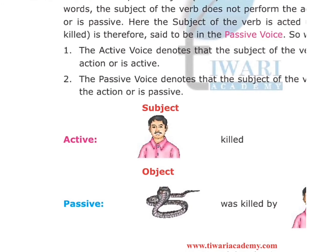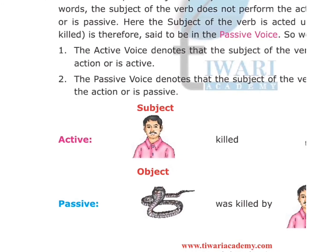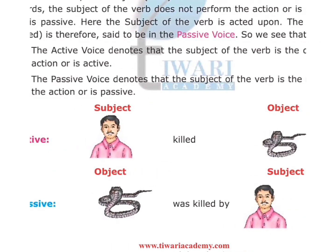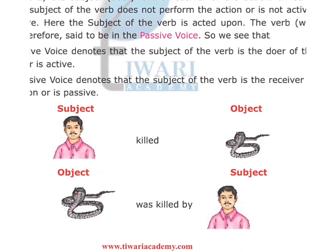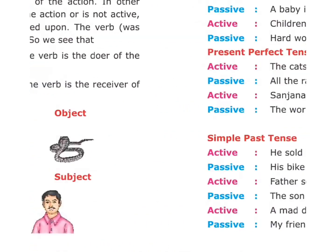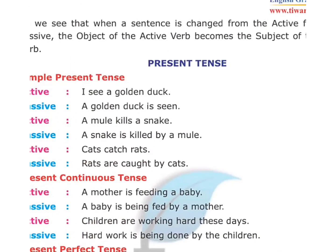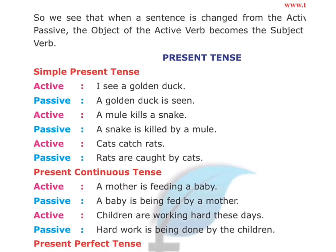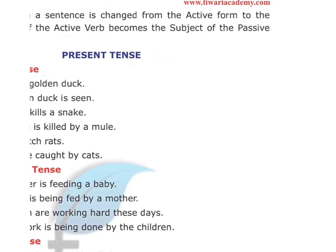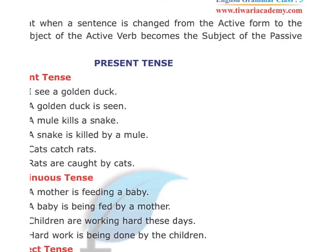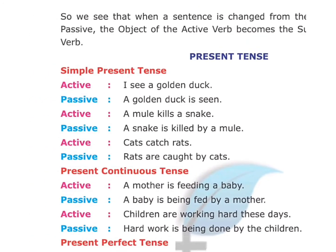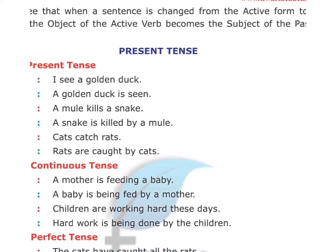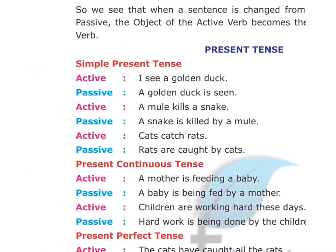In active voice: subject performs the action. In passive voice: the object is acted upon — 'was killed by.' When a sentence is changed from active to passive form, the object of the active verb becomes the subject of the passive verb.